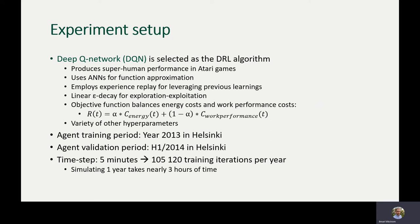For the exploration/exploitation trade-off we are going to use a linear epsilon decay function. As an objective or reward function, we are going to take into account both the energy cost — the energy used by the HVAC machinery — and the work performance cost, which stems from sub-optimal thermal conditions inside the building. The energy costs are calculated by multiplying power usage by the current electricity price, and the work performance cost is calculated by a model that depicts how work performance deteriorates when moving away from the optimal temperature zone.